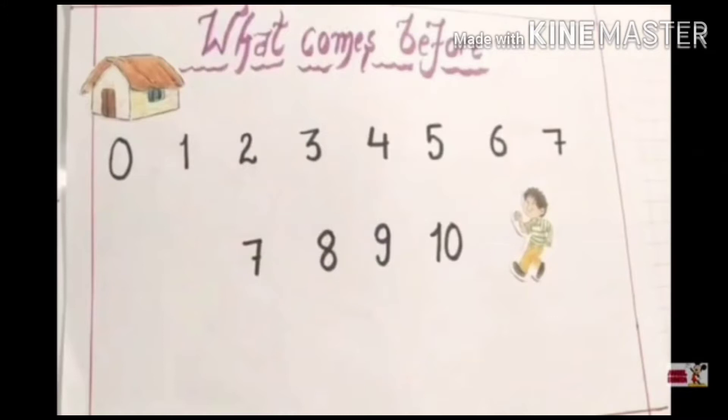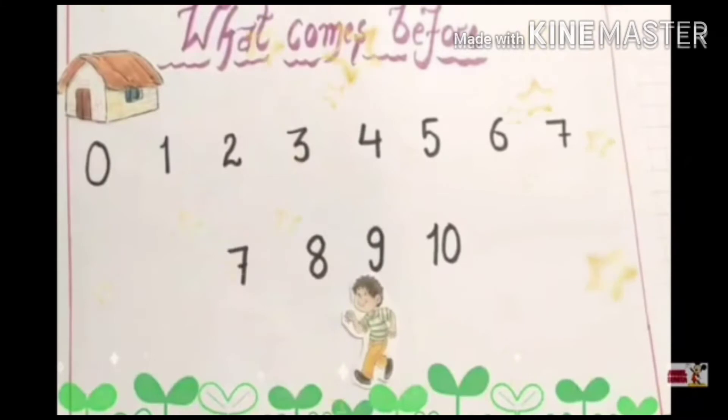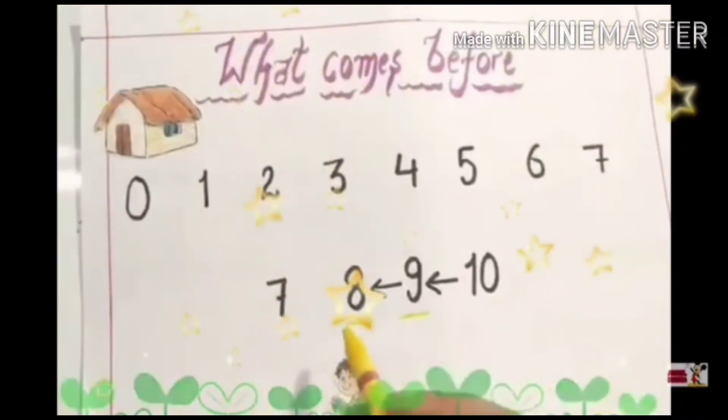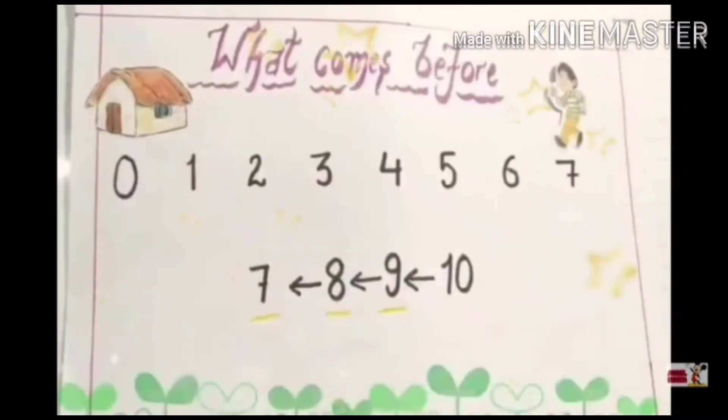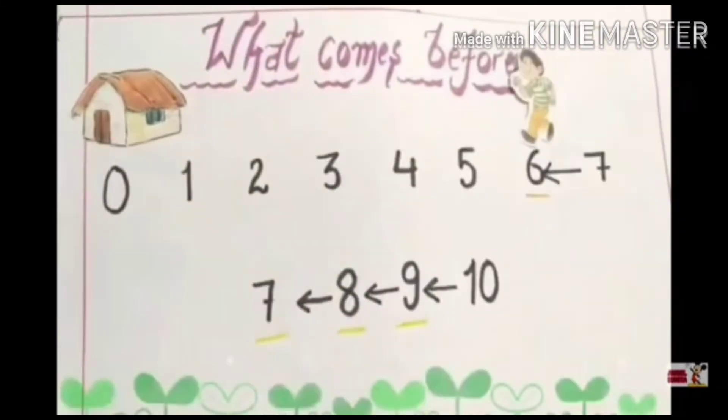Through these numbers. If I say here is 10, what comes before 10? So Johnny will go to this number, which is 9. Now he must go to number 8. Then what comes before 8? Yes, it's 7. What comes before 7? It's 6.